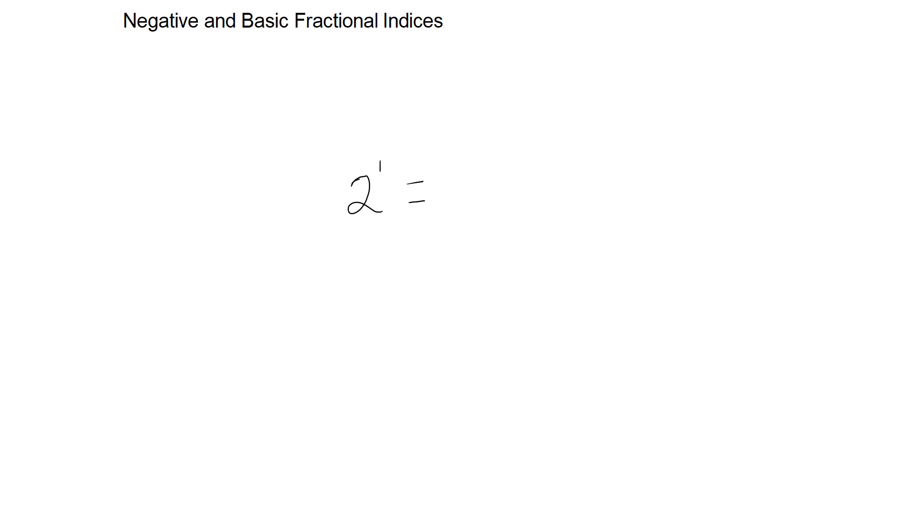We have 2 to the power of 1, that is just 2. 2 to the power of 2 is going to be 2 times 2, which is 4. 2 to the power of 3 is 2 times 2 times 2, which is 8, and so on.